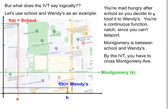So you're a continuous function naturally because you totally can't teleport. And if you can, that's awesome. But we're going to pretend that you're a normal, regular human for the purposes of this video. So Montgomery Avenue is between school and Wendy's. By the IVT, you have to cross Montgomery.